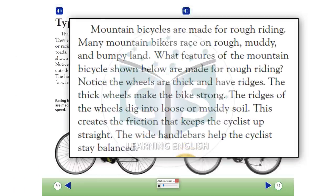Mountain bicycles are made for rough riding. Many mountain bikers race on rough, muddy, and bumpy land. What features of the mountain bicycle shown below are made for rough riding? Notice the wheels are thick and have ridges. The thick wheels make the bike strong. The ridges of the wheels dig into loose or muddy soil. This creates the friction that keeps the cyclist upright. The wide handlebars help the cyclist stay balanced.